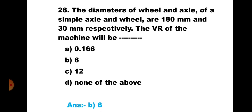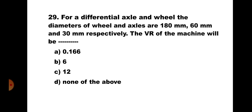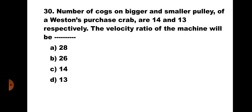Question number 29: For a differential axle and wheel, the diameters of wheel and the two axles are 180 mm, 60 mm, and 30 mm respectively. The VR will be: A) 0.166, B) 6, C) 12, D) none of the above. The formula is VR = 2D / (D1 − D2), where D = 180, D1 = 60, D2 = 30. So VR = (2 × 180) / (60 − 30) = 360/30 = 12. The correct answer is C) 12.